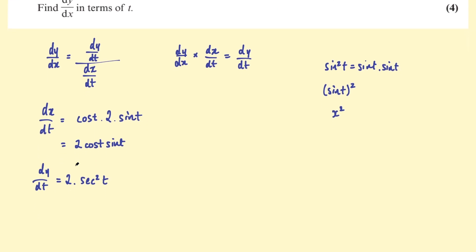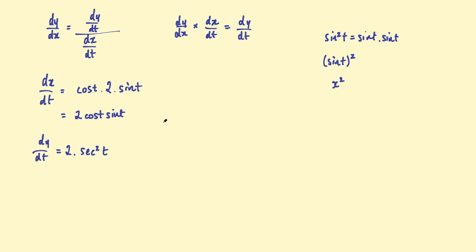Using either of these, I'll probably use this one here. So dy/dx is equal to dy/dt. Now we could write this differently. Remember sec of t is the same as one over the cosine of t.